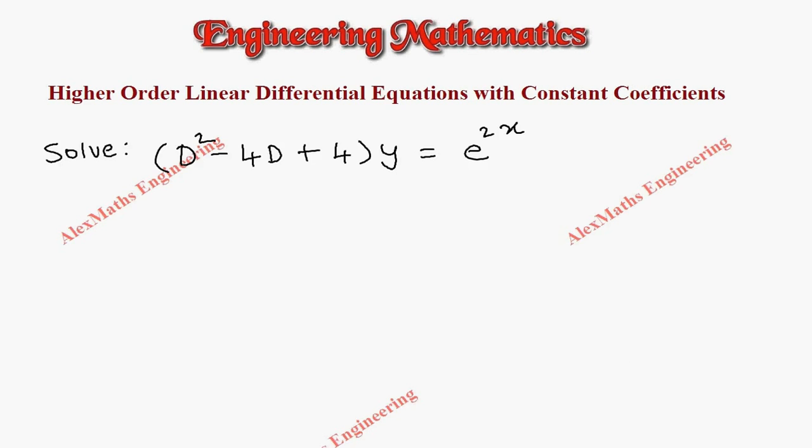Hi students, this is Alex. In this problem we are given: solve D² - 4D + 4 times y = e^(2x). As a first step, we have to write the auxiliary equation: m² - 4m + 4 = 0. This is nothing but (m - 2)² = 0.